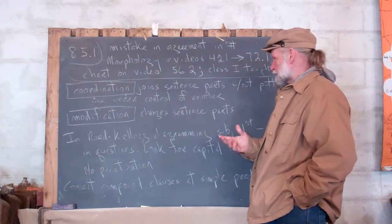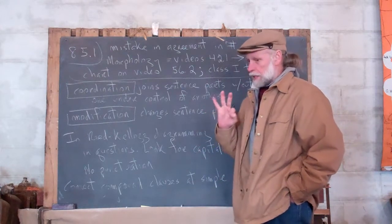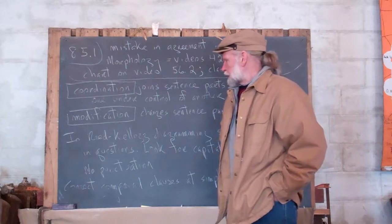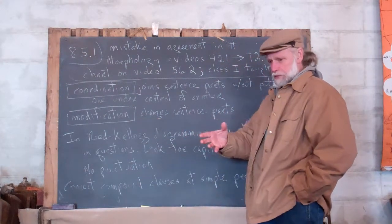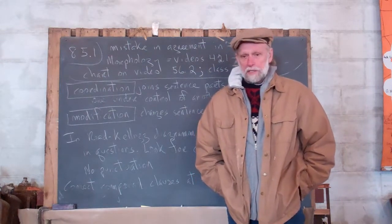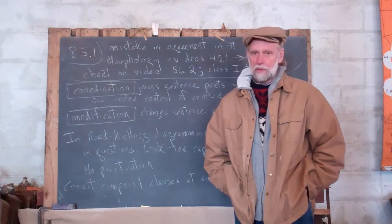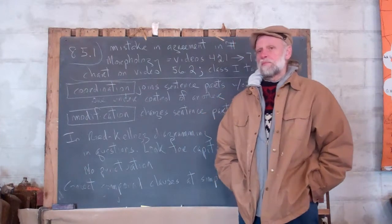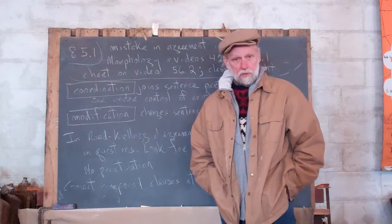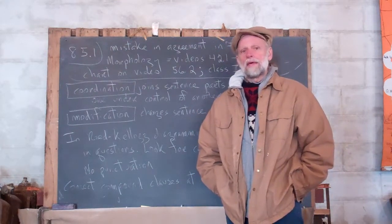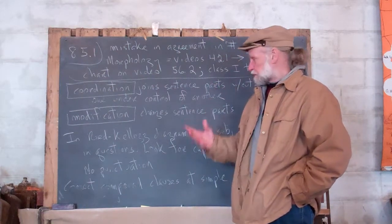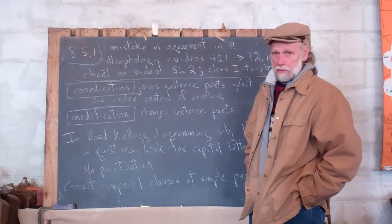What I want to deal with today is modification — that's going to be the third of these seven processes. In the next video I'll show you how it's diagrammed. Modification changes sentence parts. Back in morphology, one of the bare necessities of grammar: what is an adjective? An adjective is a word — or words, because adjectives can be phrasal — that modifies a noun or a pronoun; that is, changes them. An adverb also modifies: an adverb is a word or words that modifies a verb, an adjective, or another adverb. That's part of the bare necessities — that's the morphology.